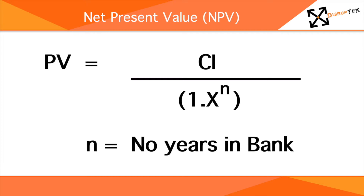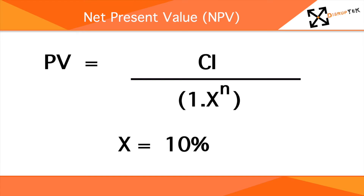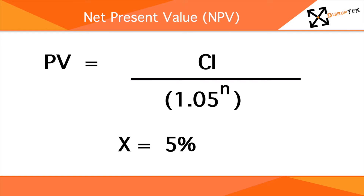In this example, we will use a discount rate of 10% for ease of calculation. So the X component is equal to 1.10. If the interest rate was 5%, it would be 1.05, or 1.15 for a 15% interest rate. It's easy to calculate.